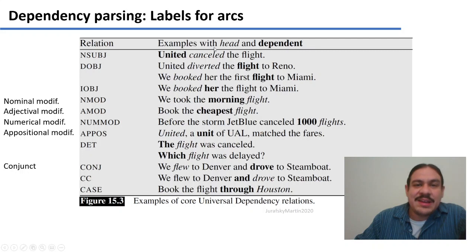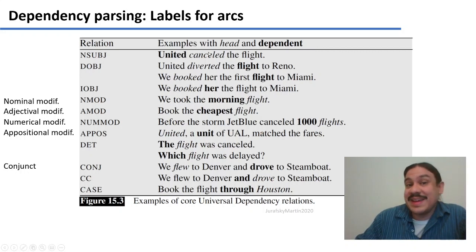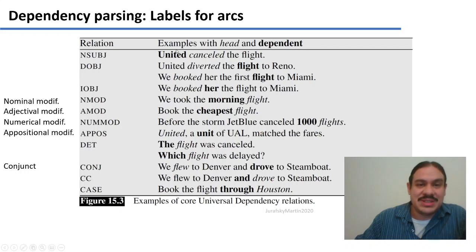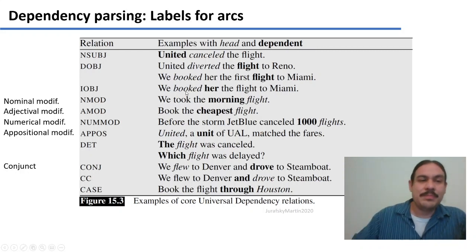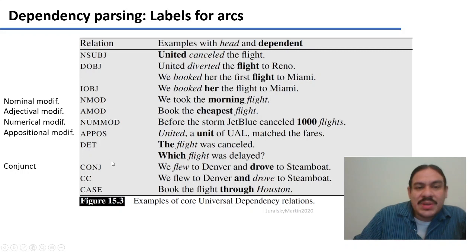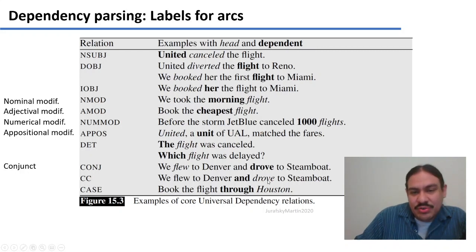For example: 'united' is the subject of 'canceled' — in 'United canceled the flight,' United is the one doing the canceling, so it's the dependent and the relationship is subject. You also have direct objects — 'We booked her the first flight to Miami': what did we book? The flight. There's indirect object — who did we book it for? Her. We have nominal modifiers like 'morning flight,' adjectival modifiers like 'cheapest flight,' determiners like 'the flight,' and conjunctions like 'and drove.' I'll tell you about the case label in the next video.